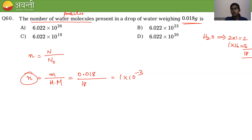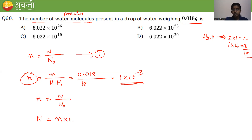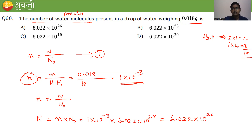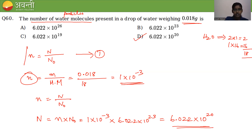Now substitute into equation N = n × N₀. The number of particles = 1×10⁻³ × 6.022×10²³ = 6.022×10²⁰. So there are 6.022×10²⁰ water molecules. The answer is option D.